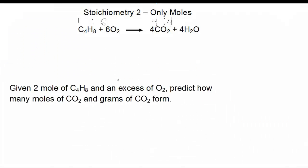Let's try another one: given two moles of C4H8 and an excess of O2, predict how many moles of CO2 and grams of CO2 would form. In this case, we have plenty of O2 because it says we have an excess, meaning there's tons of it around. What we're told is we're only given two moles of this reactant. If the ratio is one to four, and we had one mole of C4H8 producing four moles of CO2, then two moles of C4H8 would produce eight moles of CO2.